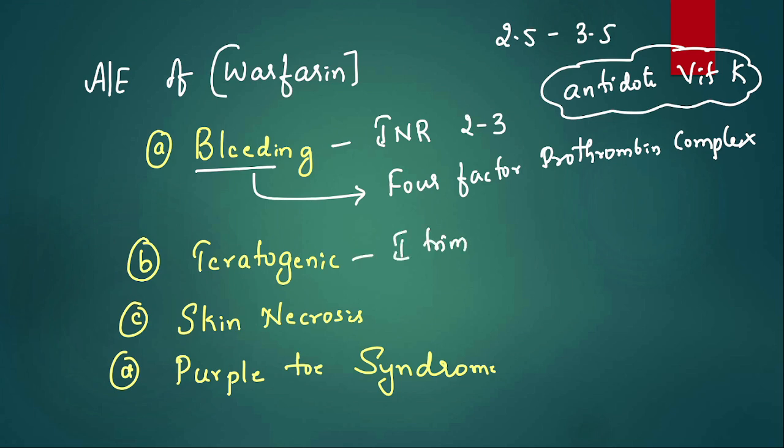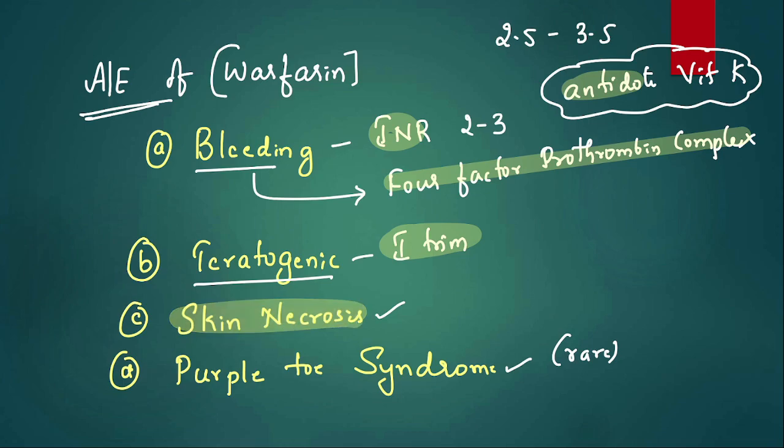This contains all the clotting factors like 2, 7, 9, 10 and protein C and S. Now don't give this in first trimester of pregnancy - it can cause teratogenicity, particularly it can cause a bone problem: nasal bone hypoplasia, then stippled epiphysis. So if they give nose defect - I mean a depressed nose - and skeletal abnormality, it is due to warfarin. Skin necrosis I've explained, and it can also cause purple toe syndrome, very rare adverse effect. This is due to mobilization of cholesterol emboli. So this is the adverse effect of warfarin. I have told you what to monitor, what is the antidote, what to do when there is bleeding, where to avoid this, why skin necrosis, and how to avoid this.